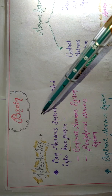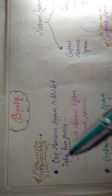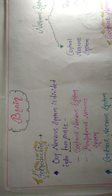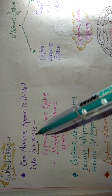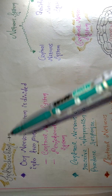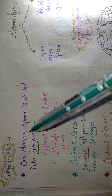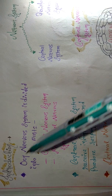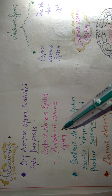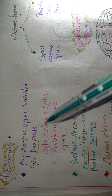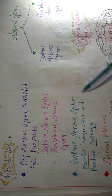So if they ask you any questions regarding the brain, start writing with an introduction. Our nervous system is divided into two parts — I have already uploaded the introduction of nervous system, you can go and check that video also. Our nervous system is divided into central nervous system and peripheral nervous system. Central nervous system means the mid portion of our body.